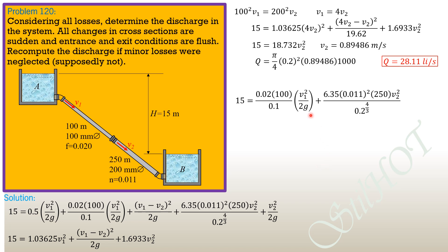Substituting the value of V1 which is 4 times V2 square, so we have 4 V2 square over 2G plus 6.35 times 0.011 square times 250 V2 square over 0.2 to the 4 thirds. So 15 equals 17.952 V2 square. So from here, we can compute V2. V2 is 0.91409 meter per second.